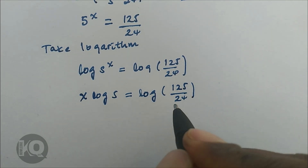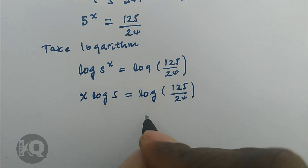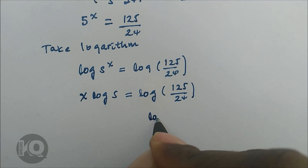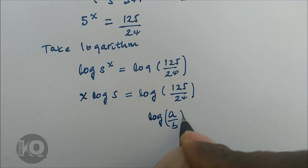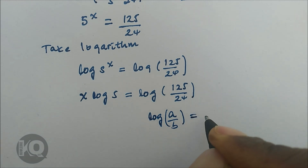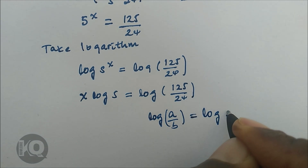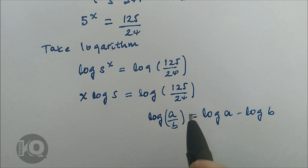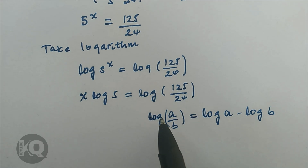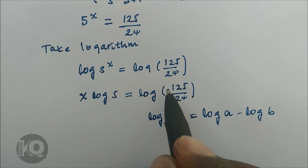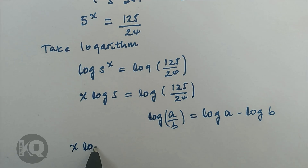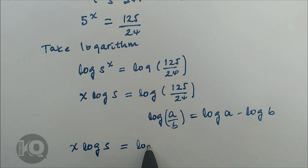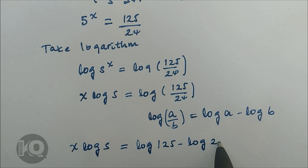Using the logarithm rule that log of a over b equals log a minus log b, we apply this to the right side: x log 5 equals log of 125 minus log of 24.